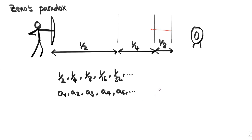So we can talk about the hundredth term, which would be a₁₀₀, without even knowing what the value of a₁₀₀ is. And going even further, we can talk about aₙ, the nth term, where we haven't even specified what n is yet — n is just a stand-in for any number that we want. Now I said that we're not going to know the value of say a₁₀₀ or aₙ, but in this case we actually can write down a formula for aₙ.